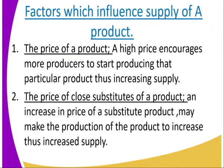We start by looking at the factors which influence the supply of a commodity. Number one is the price of the commodity. High prices will encourage more producers to start producing that particular product, thus increasing its supply. High prices result in high supply of the commodity in the market. So: high prices, high supply; low prices, low supply.